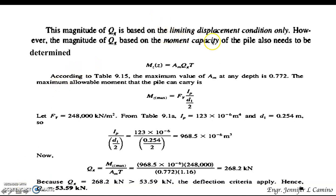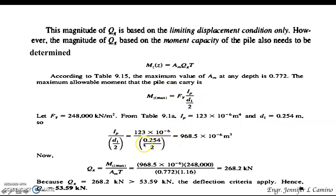The magnitude of Q_g = 53.59 kN is based on the limiting displacement condition only. The moment capacity of the pile must also be checked. The maximum value of A_m at any depth is 0.772 according to table 9.15. Using f_y and I_p from table 9.1a, the section modulus S equals 968.5 × 10⁻⁶ m³.